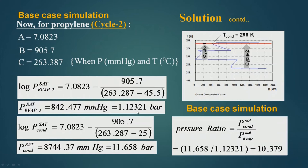For cycle 2, the evaporator pressure is 1.12321 bar and the condenser pressure remains the same at 11.658 bar. So the pressure ratio is 11.658 divided by 1.12321, which comes out to be 10.379. This compression ratio is very high, and generally for such a ratio a single compression is not used because energy consumption will be more. However, for the present case a single compression will be used for comparison purposes.